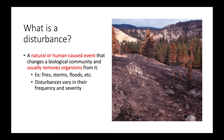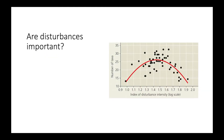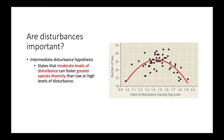Disturbances are going to vary in their frequency and in their severity. Are disturbances actually important for the survival of a biological community? There's something called the intermediate disturbance hypothesis, which states that moderate levels of disturbance are going to actually lead to greater species diversity than lower or higher levels of disturbance. In this graph we can see that at the lower ends of disturbance intensity we're going to have less species diversity.